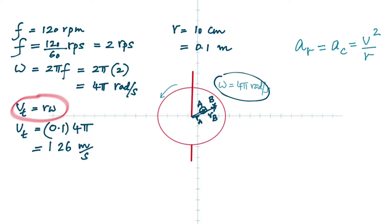Now let's imagine it's speeding up — like a ceiling fan when you switch it on. Omega changes, so alpha is no longer zero. That means it has another acceleration: A_T — tangential acceleration — because the tangential velocity is changing. The relation is: tangential acceleration equals R times alpha.